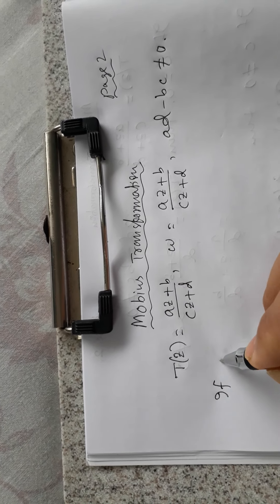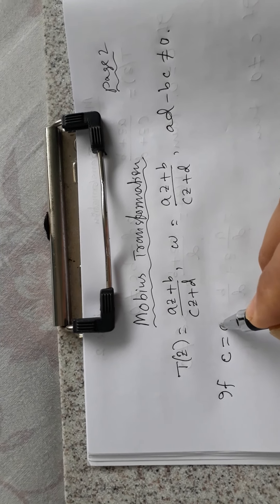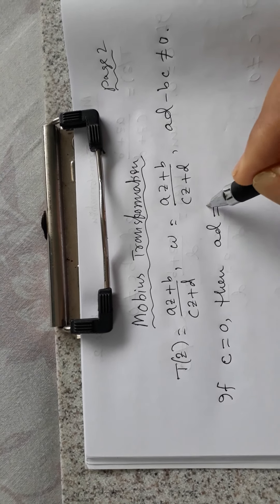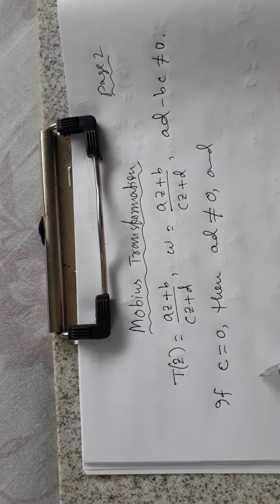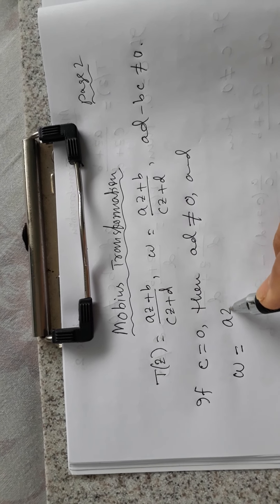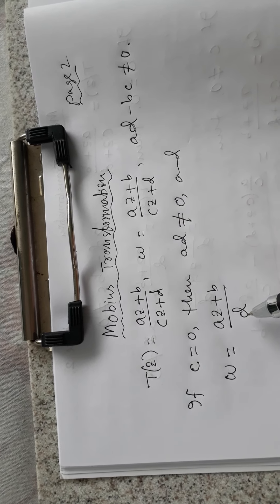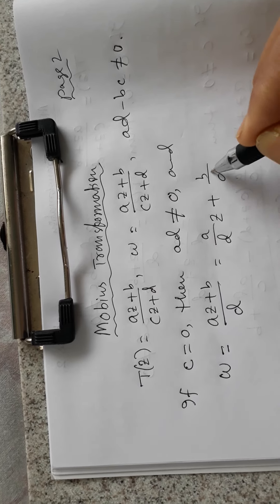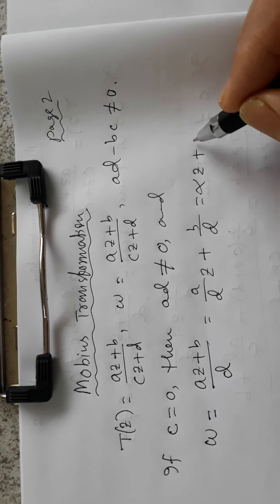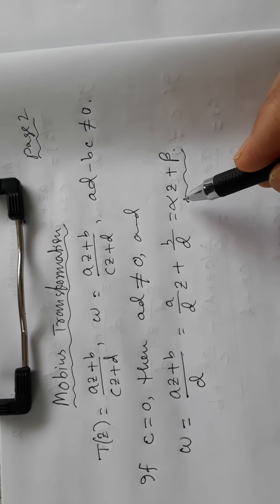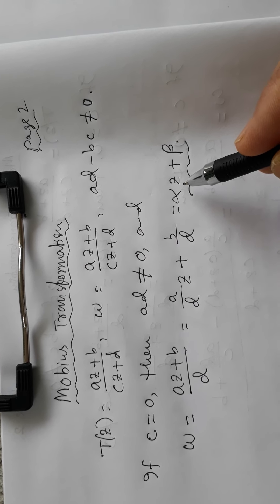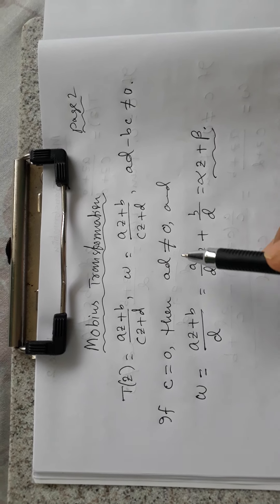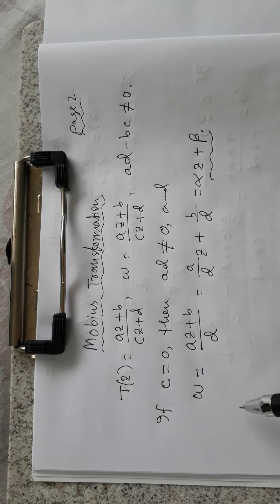For example, if c is equal to zero, then ad must be not equal to zero, and the transformation becomes (az + b) / d, which is just alpha*z + beta. We already discussed this as expansion or contraction, then rotation, and then linear translation.